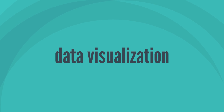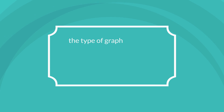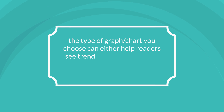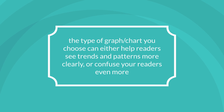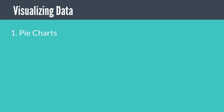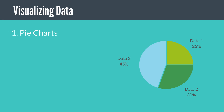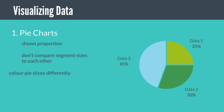Next, we'll talk about visualizing data. The type of graph or chart that you choose is important because it can either help the reader see patterns and trends more clearly or confuse them even more. Firstly, pie charts — these are great for proportion or showing parts that add up to a whole. Avoid trying to compare different segments of a pie chart with each other; use a bar chart instead. Use different colors for different slices and label the segment size as well.